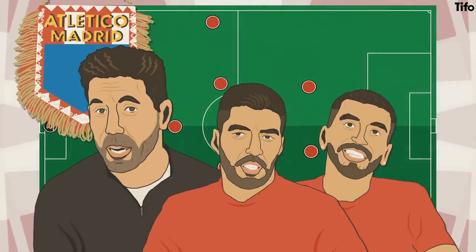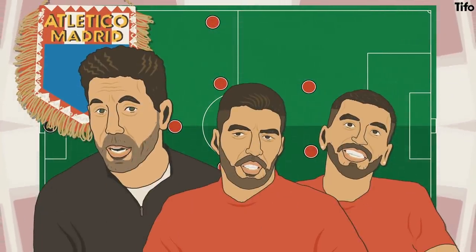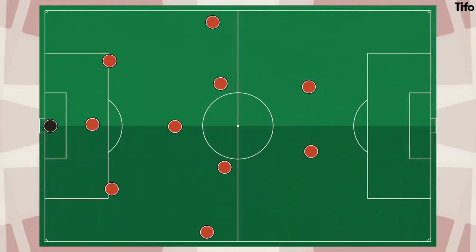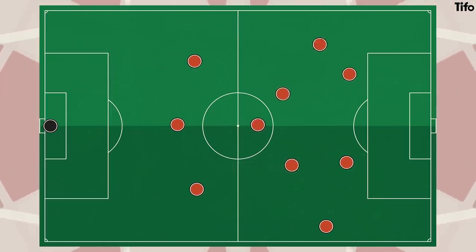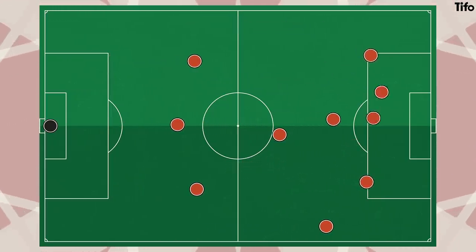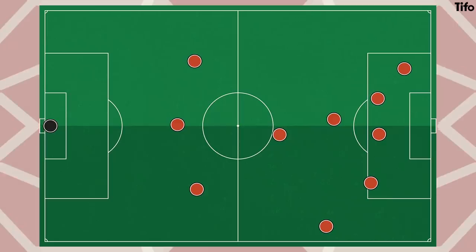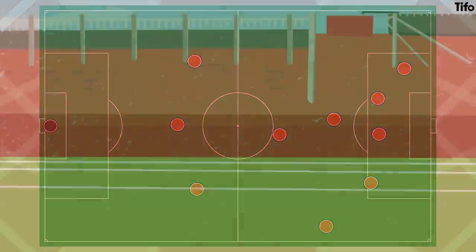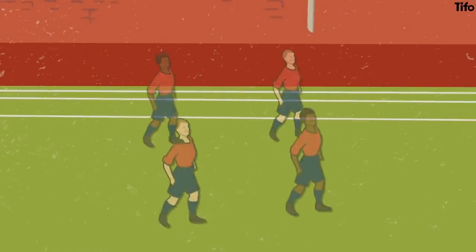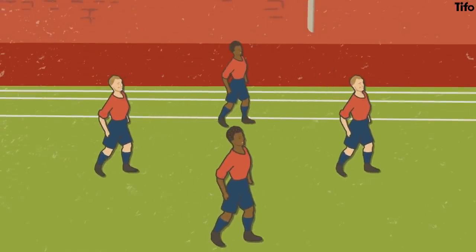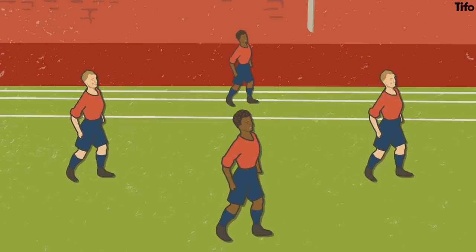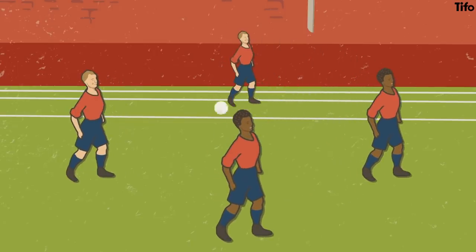Atletico Madrid are another example of a team that we think of as structurally rigid. Yet, when they break forward on the counter, the movement and interchange of the forwards helps with chance creation. All teams are capable of this kind of movement, and even the most defensive and rigid of systems still cater for players changing positions during quick passing moves to help confuse a defence.